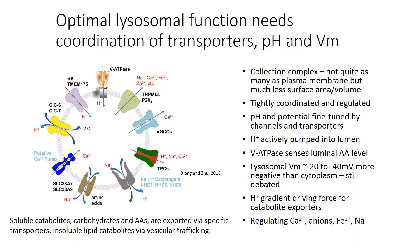We've already talked about the vesicular proton ATPase that delivers protons to the lumen. This proton pump also responds to levels of amino acids in the lumen and can regulate cellular energetics. The membrane potential across the lysosomal membrane into the lumen is negative, minus 20 to minus 40 millivolts. The concentration of protons is important in helping get rid of catabolites, particularly breakdown products from carbohydrates and amino acids, exported through sodium-dependent amino acid transporters via secondary function with sodium hydrogen exchangers.